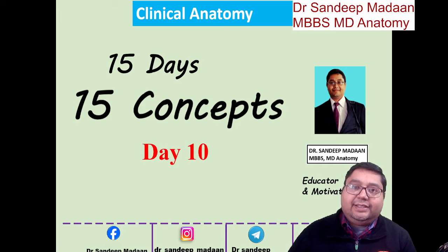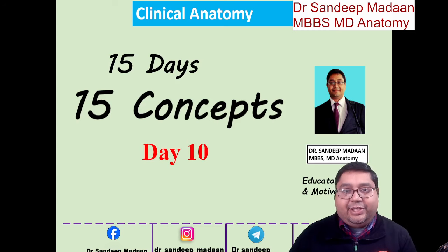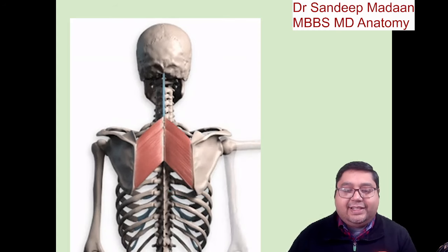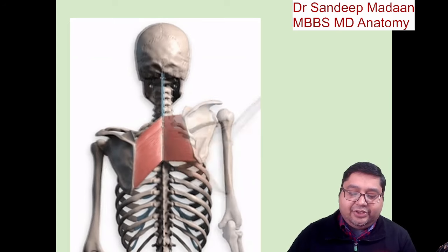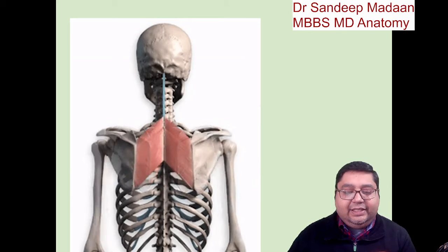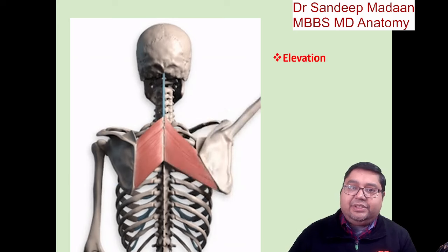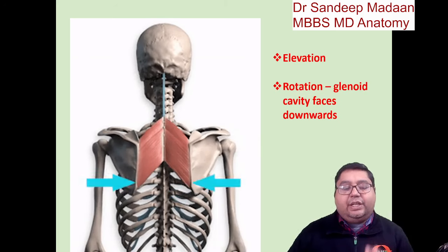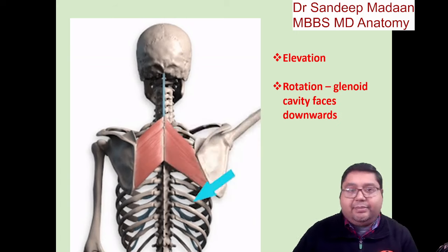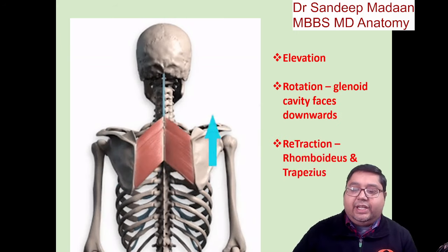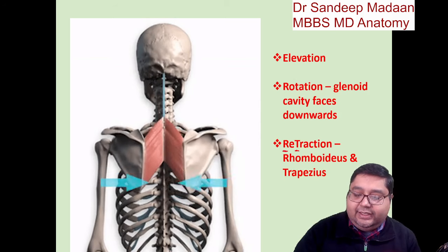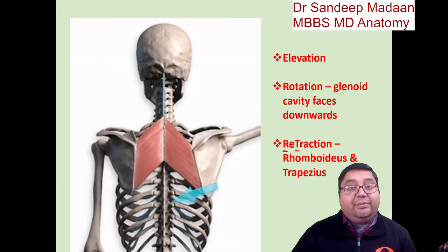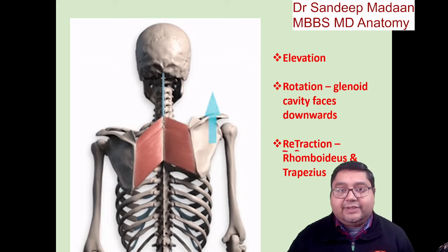Today I have taken the concept of muscle action. One of the areas I have chosen is a favorite of your examiners — the rhomboids and the levator scapulae. You can see the muscle actions: this is elevation, this is rotation, and this is retraction. It does elevation, it does rotation — particularly, it brings the glenoid cavity downward because the rotation happens in an oblique manner — and then retraction. We write retraction with R and T in capitals to remember that retraction is actually done by rhomboids plus trapezius.